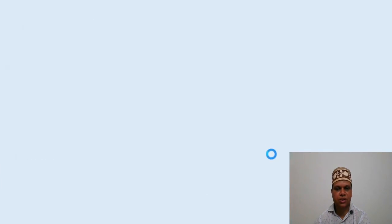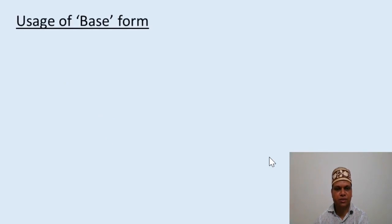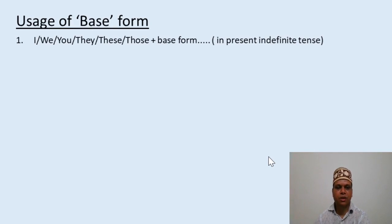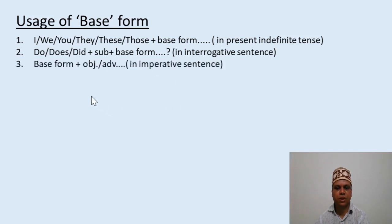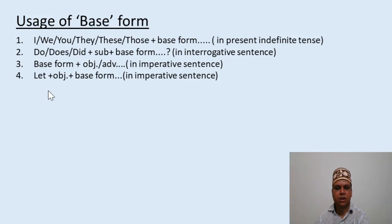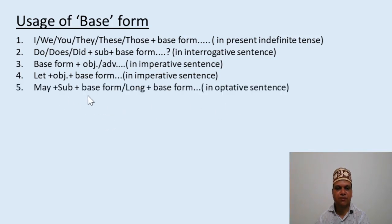Now let's see the usage of the six forms of the verb. First comes the usage of the base form. In present indefinite tense, we use the base form after the subjects: I, we, you, they, these, those. In interrogative sentences, do, does, did follow the base form. In imperative sentences — giving a command to a person — we use the base form. In imperative sentences, 'let' also follows the base form.